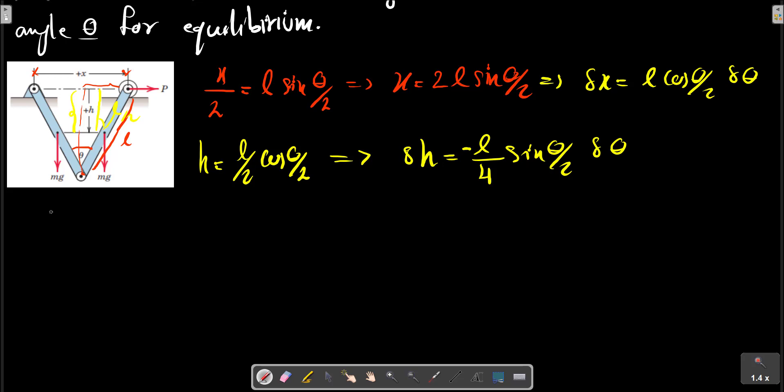And from this relation we can obtain a relation for the virtual works. The virtual work principle states that delta U must be equal to zero at equilibrium. The force P multiplied by delta x plus 2mg, one mg here and one mg here, multiplied by delta h should equal zero.